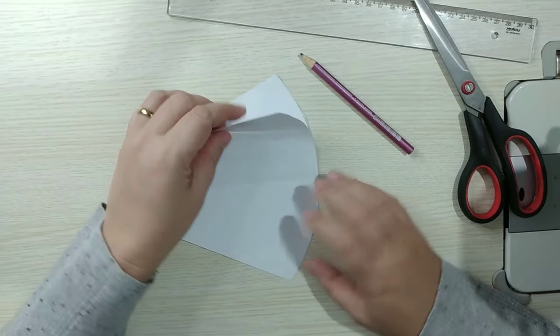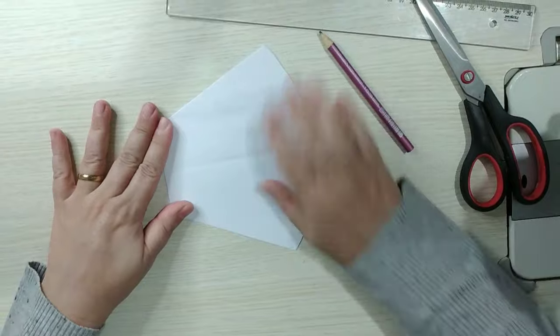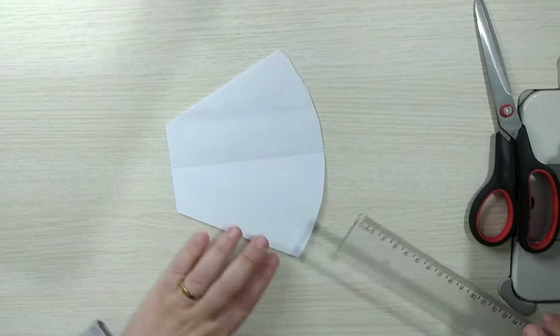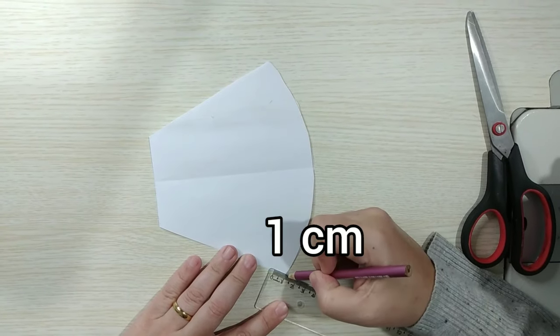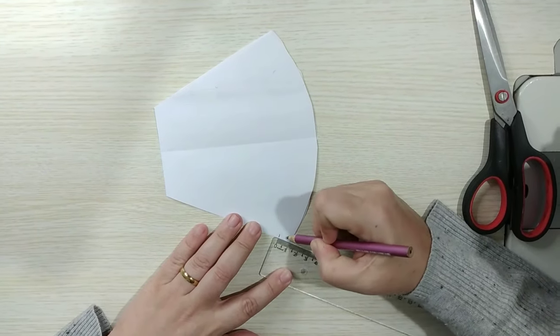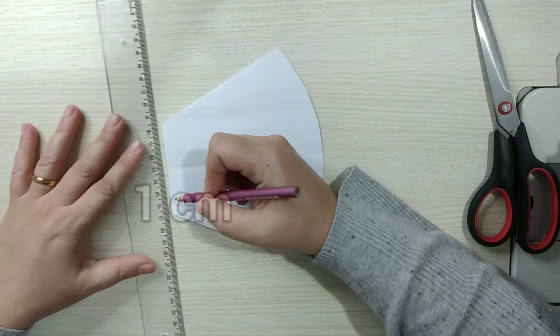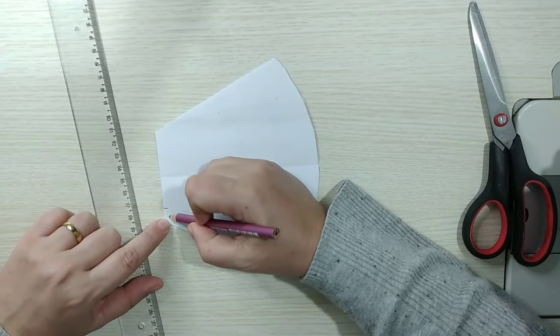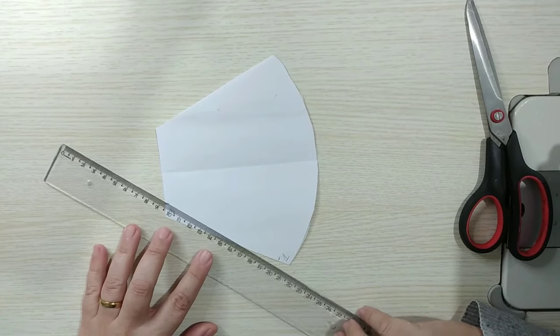Tá vendo? Aqui está a parte aberta. Mas nós ainda vamos fazer algumas marcações aqui pra ela ficar mais bem modelada. Nós vamos entrar um centímetro dessa ponta aqui pra dentro. Um centímetro. E aqui também, um centímetro dessa pontinha pra cima. Um centímetro.